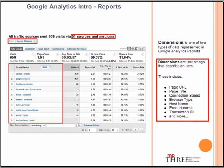Dimensions is one of two types of data represented in Google Analytics reports. Dimensions are text strings that describe an item. These include page URL, page title, and connection speed.